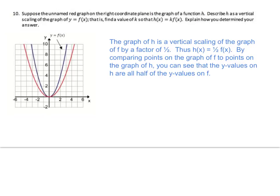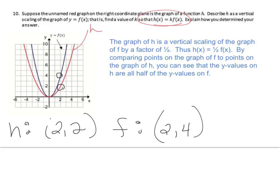Number 10: suppose the unnamed red graph is the graph of a function h. Describe h as a vertical scaling of y equals f(x). The graph of h is a vertical scaling of the graph of f by a factor of one half. Thus, h(x) equals ½ f(x). By comparing points, the y-values on h are all half the y-values on f. At h, going over 2 gives up 2; going over 2 to hit f gives up 4 — so h(x) equals ½ f(x).